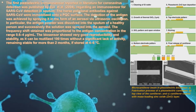Polyclonal antibodies against SARS-CoV-2 were immobilized onto a PQC surface. Detection of the antigen was achieved by spraying it in the form of an aerosol via ultrasonic oscillation — the antigen powder was dissolved in sputum of a healthy person and the solution was then sprayed into aerosol. The frequency shift obtained was proportional to the antigen concentration in the range of 0.6 to 4 micrograms per milliliter. The biosensor showed very good reproducibility and stability, as it can be utilized 100 times without significant loss of activity, remaining stable for more than 2 months if stored at 4 to 6 degrees Celsius.